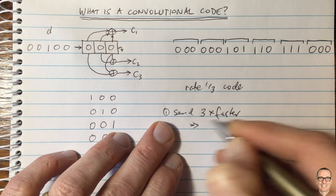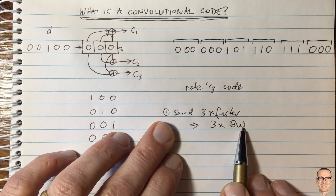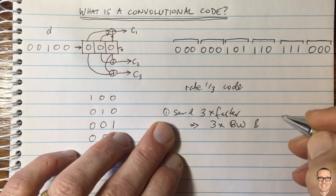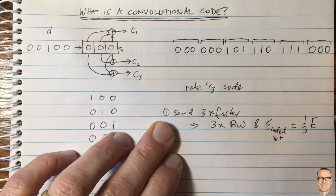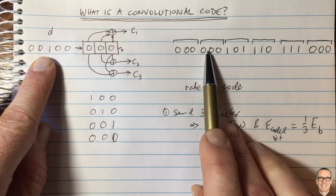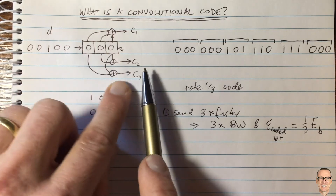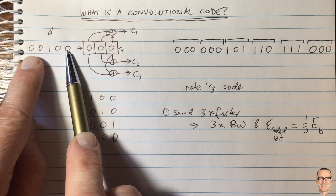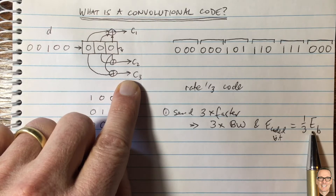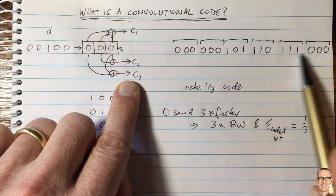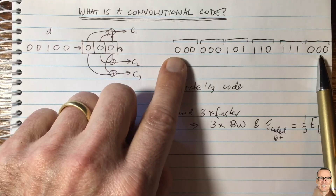If you're sending three times faster with the same power, you need three times the bandwidth. It also means the energy in a coded bit is only one-third the energy of the original bits, because each coded bit lasts only one-third as long. This means you'll get errors in the coded bits at a higher rate than you would have in the uncoded bits — because they have only a third of the energy.